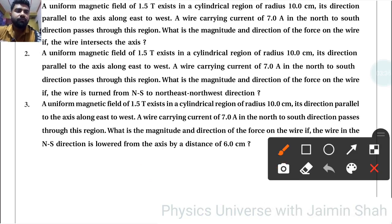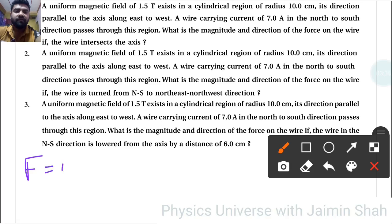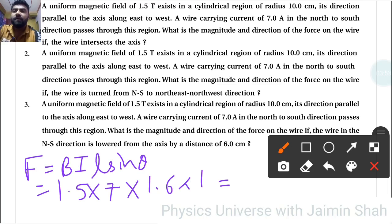Now similarly, we have to put force formula F equals BIL sine theta. B is 1.5, I is 7, L is now new 1.6, and sine 90 is 1. So 1.5 into 7 into 1.6, so that is 16.8 Newton. So this is the force.